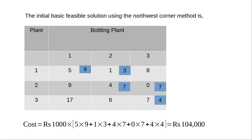Now, is this the optimal solution? How do we find out, and can we improve the solution? We use the Modi method, or the modified distribution method, to find the optimal solution.